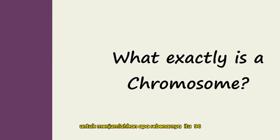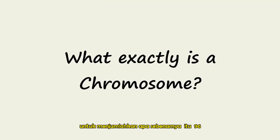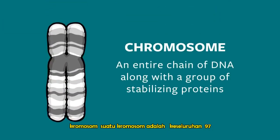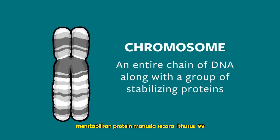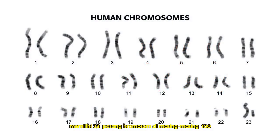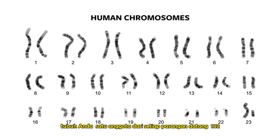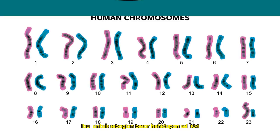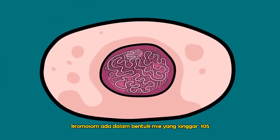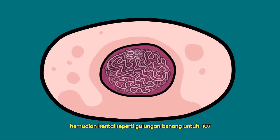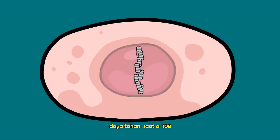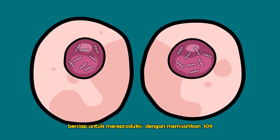So, to sum things up: what exactly is a chromosome? A chromosome is an entire chain of DNA along with a group of stabilizing proteins. Humans typically have 23 pairs of chromosomes in each of their cells — that's 46 altogether. In your body, one member of each pair came from your father, the other from your mother. For most of a cell's life, chromosomes exist in a loose, noodle-like structure. Chromosomes are copied and then condensed like spools of yarn for durability when a cell prepares to reproduce by splitting in two.